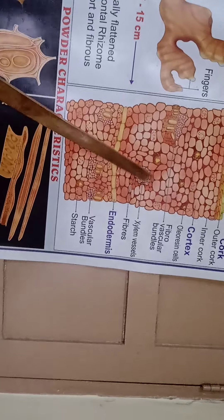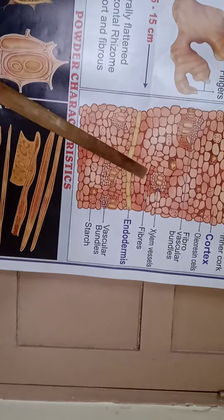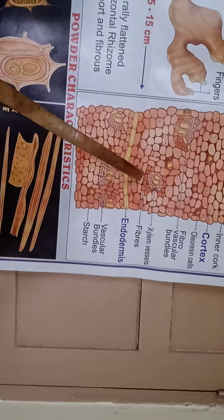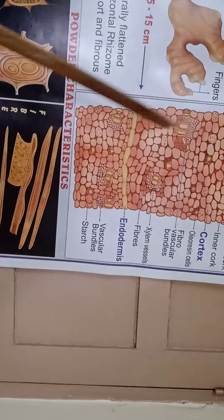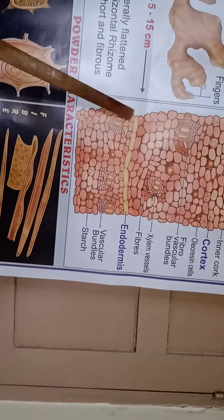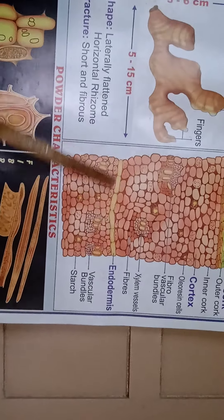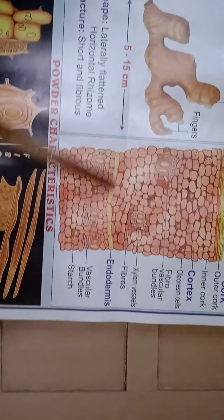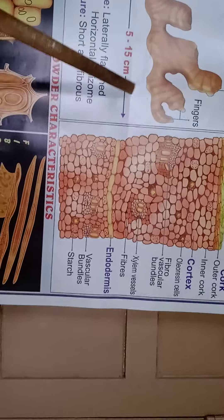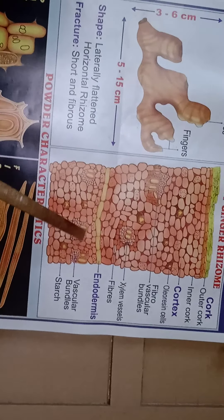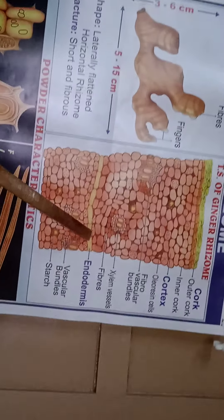Fibers are present in the cortex region. These fibers are lignified, pitted, and separate. Here you can see some fibers shown. Below that, the endodermis region is present, which runs horizontal to the transverse section. It is single-layered with radial walls slightly thickened and free from starch.